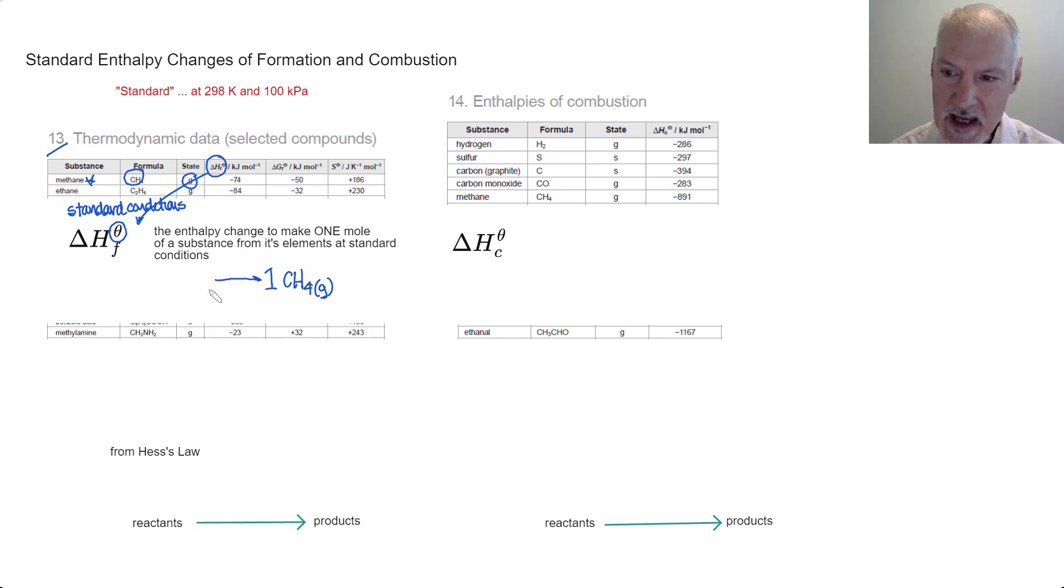To make that from its elements we would require carbon and hydrogen. Hydrogen at standard conditions is a gas. Carbon at standard conditions is a solid, and in particular graphite. To balance this equation I would need a two here.